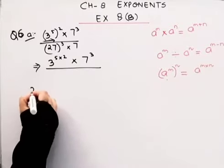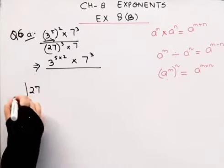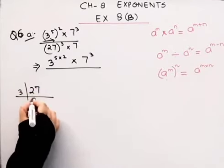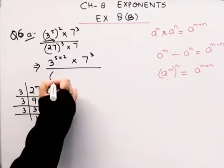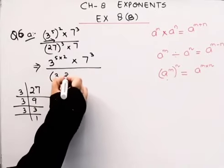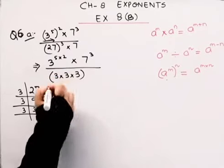Now I will write the prime factors of 27. 3, 9s are 27, 3, 3s are 9, 3, 1s are 3. That means, how can I write 27? 3 into 3 into 3, right?